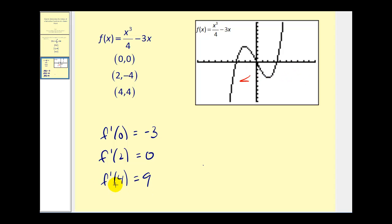And at x equals 4, the derivative function is equal to 9, which means on our original function at x equals 4, the slope of the tangent line should be equal to 9. And it looks like it is.